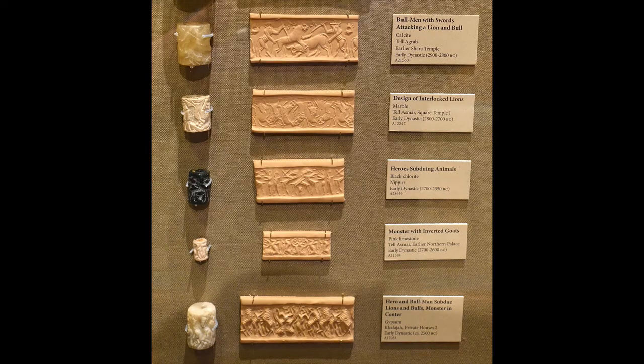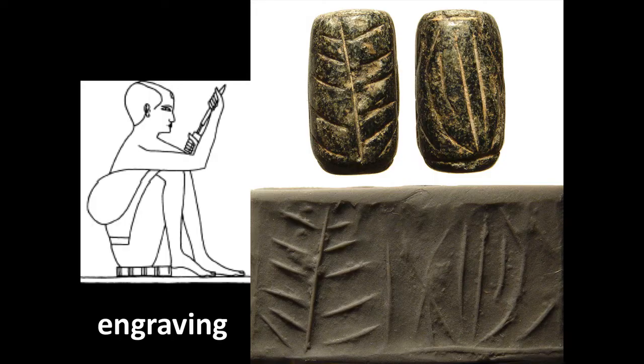The earliest cylinder seals tended to be made of fairly soft stone. As cutting and engraving technology improved, they started to use harder and harder stones. With harder stones and the additional work required to work with them, we also have higher prestige for these harder stones. That's where rock crystal comes in, because it's about a seven on the Mohs hardness scale. What you see here is a drawing taken from an Egyptian tomb showing a man doing engraving on a stone. On the right, you have a cylinder seal — a very early primitive one — and its impression down below. You can see that the engraving simply consists of lines gouged into the stone.